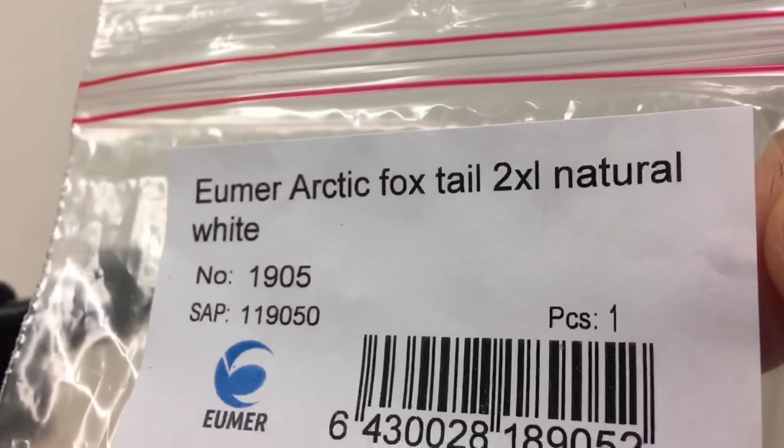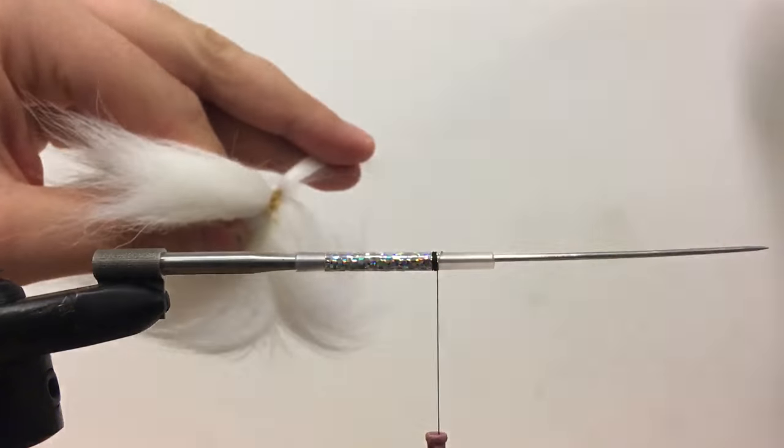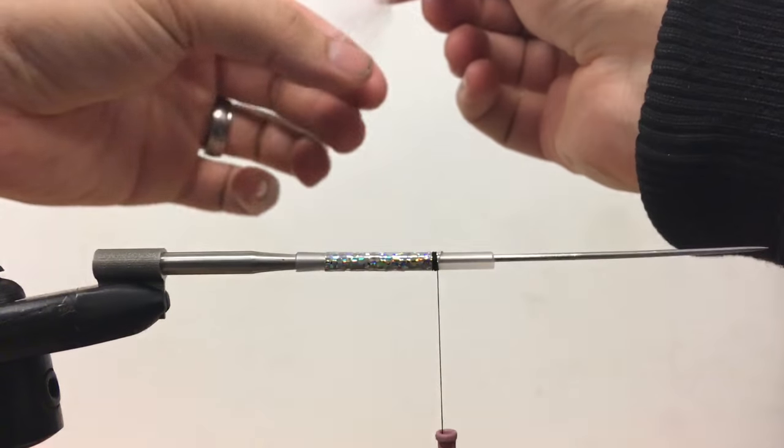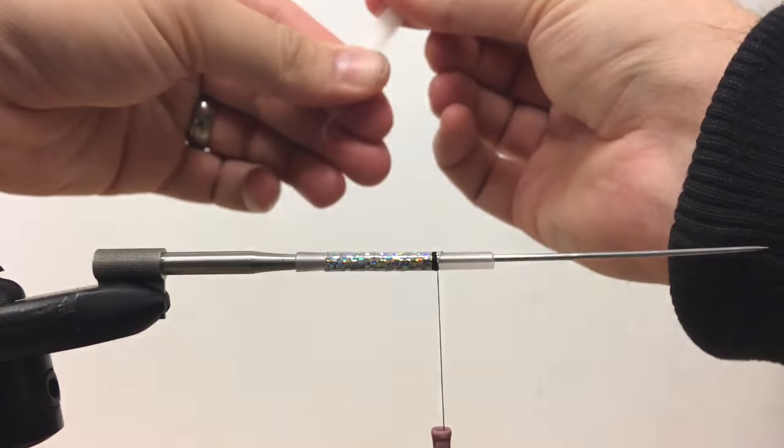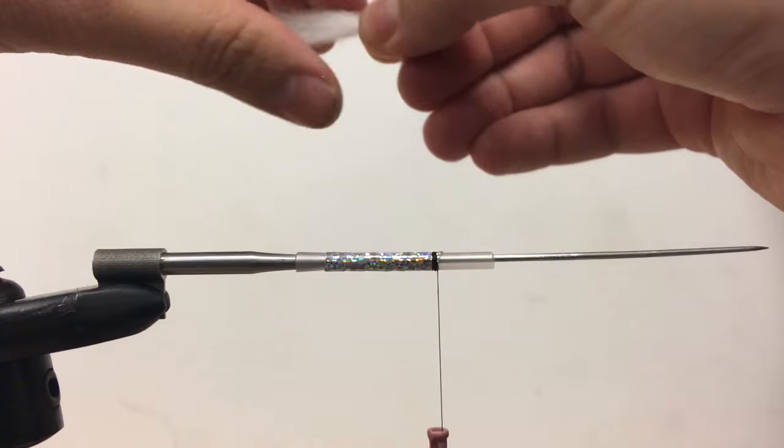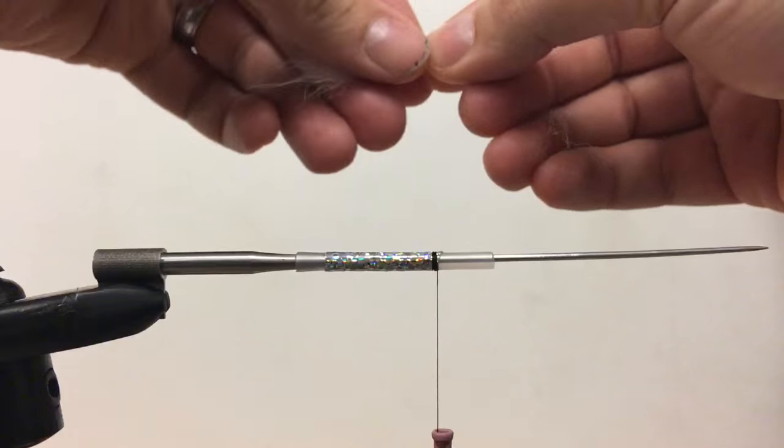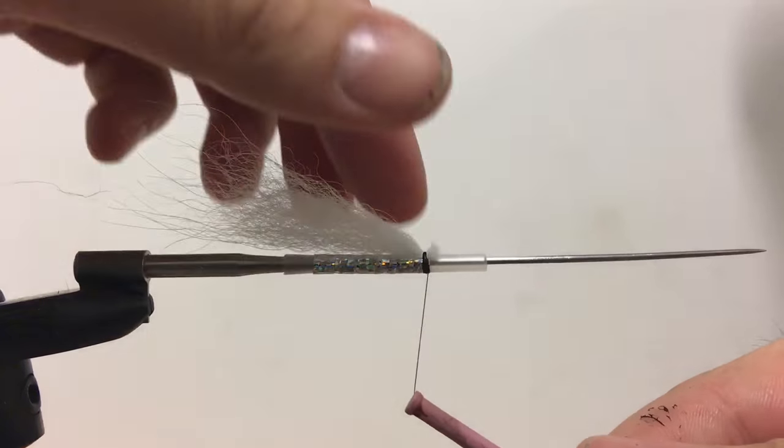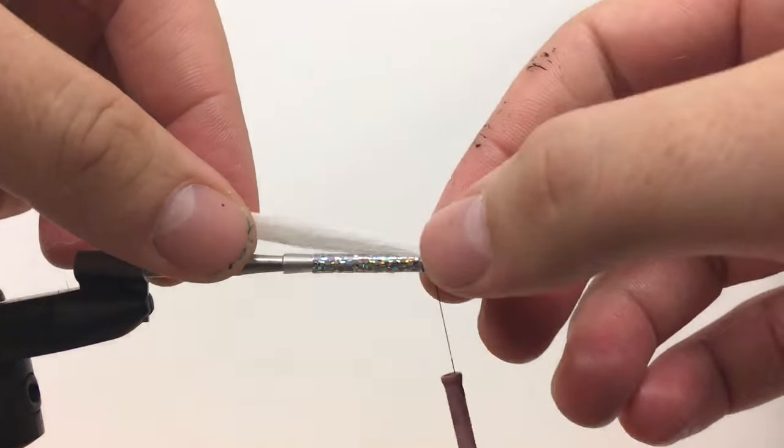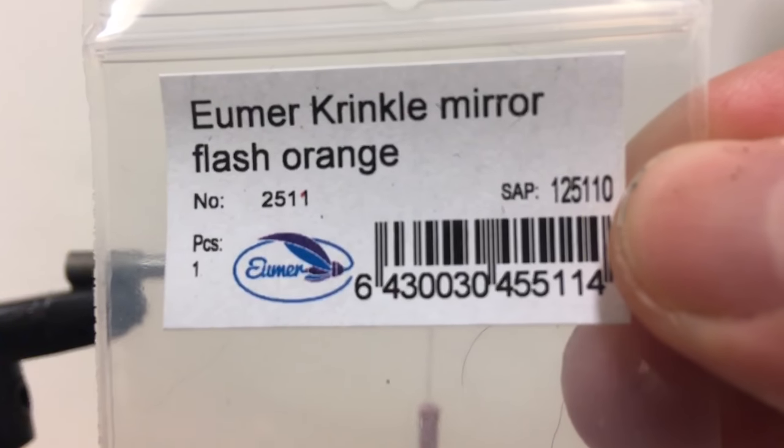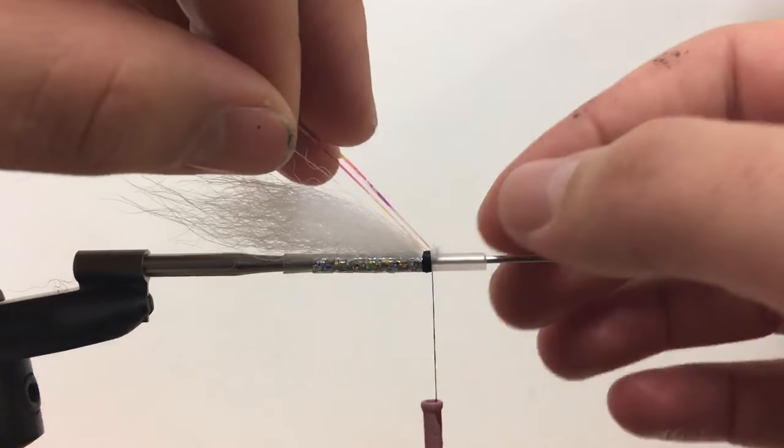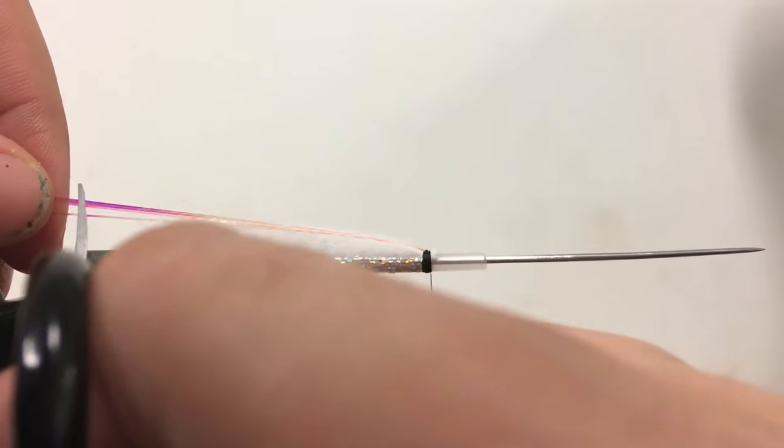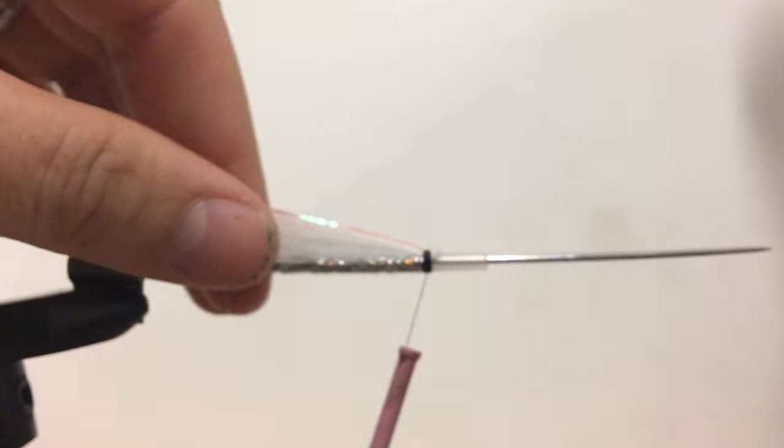We make the first wing using 2XL natural white fox hair and tie it on. To add some flash to the wing, we use a few strands of green grub mirror flash. We tie them on at the half and then cut all fibers at different lengths.